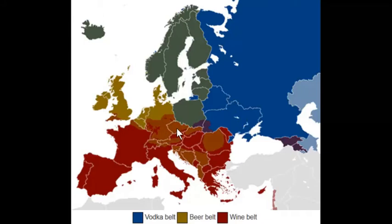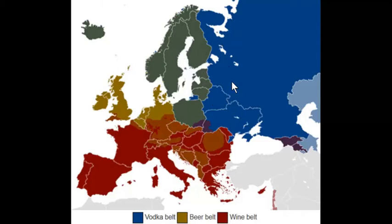Finally, we have the blue area — the vodka belt. That includes Russia and the Soviet areas. We also see it in Sweden, Finland, and Norway to a certain extent. What grows there? Potatoes, which are critical to creating vodka. Also turnips, beets, and cabbage. The moral of the story is Russians are not known for their food, but they're definitely known for their booze.